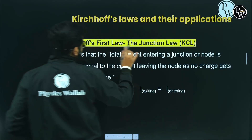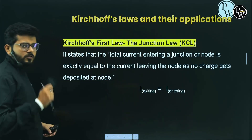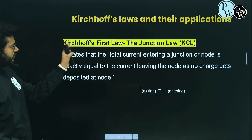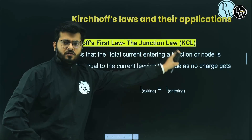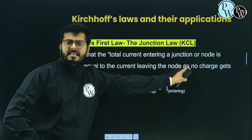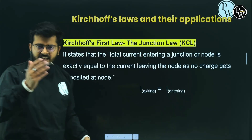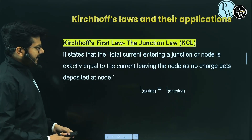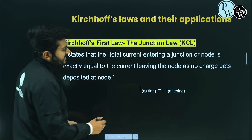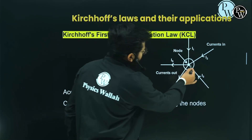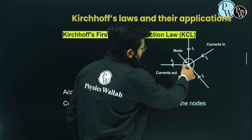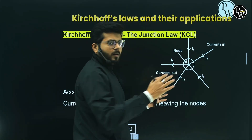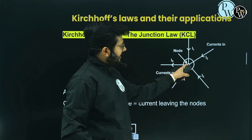Kirchhoff's first law is called Kirchhoff's Junction Law, or KCL. There are two laws of Kirchhoff. Let's understand how to apply it. It says that we don't produce or destroy current at the junction.